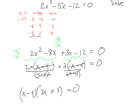Anytime it says solve, that means there was an equal sign, which means when I'm done I'll have x equals some value or possibly another value. I've got two parenthesis sets that multiply to give me 0. If a times b equals 0, then either a is 0 or b is 0. So either x minus 4 equals 0 — add 4 to both sides, x equals 4 — or 2x plus 3 equals 0: subtract 3, giving 2x equals negative 3, divide by 2, x equals negative 3 halves.